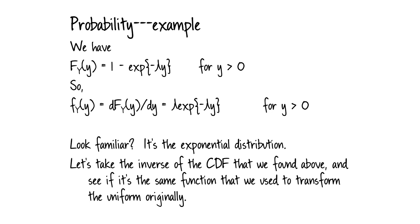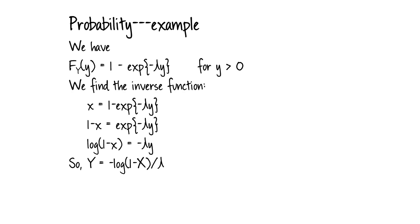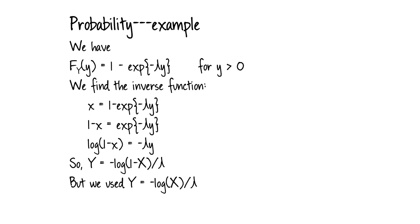Let's take a step back, take the inverse of the CDF we found, and see if it's the same function we used to transform the random variable originally. We have CDF equal to 1 minus e to the negative lambda y. Solving for y by writing x equals 1 minus e to the negative lambda y, and then plugging in capital X and Y — but that's not the same function we used in the example. What's going on?